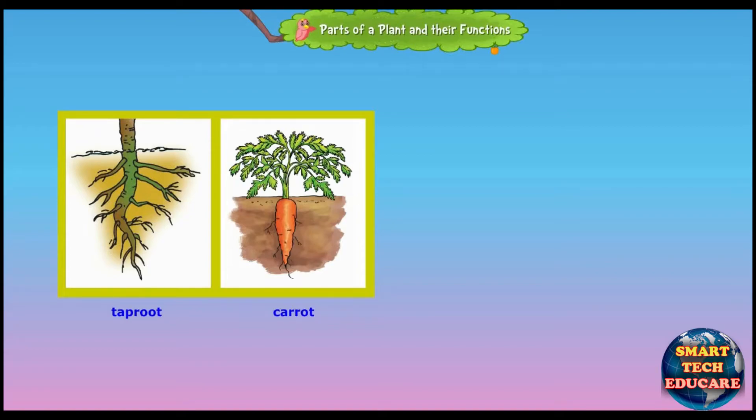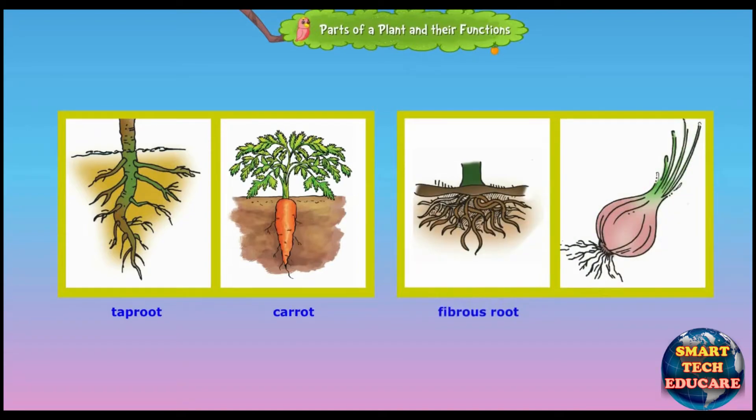When a number of roots grow from the end of the stem, they are said to be fibrous roots. Onion, grass and rice have fibrous roots.